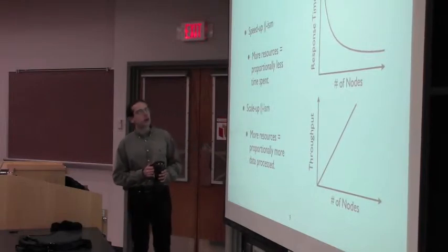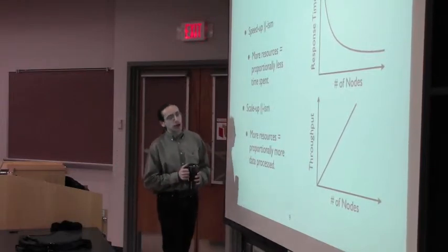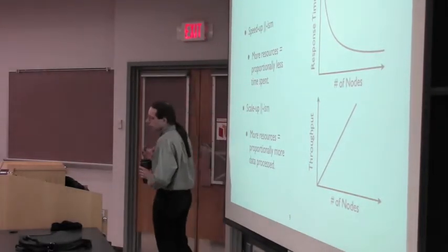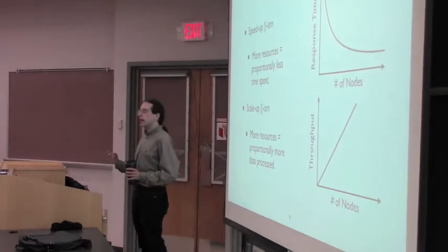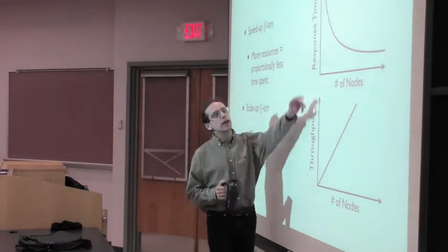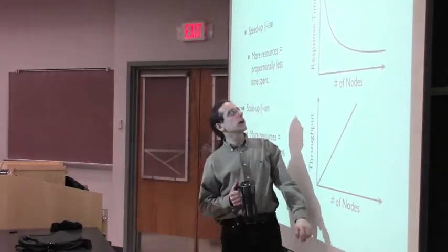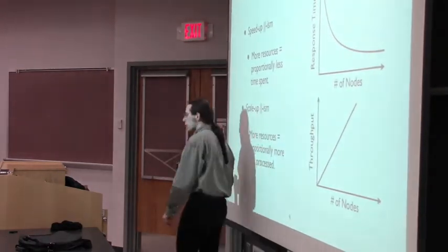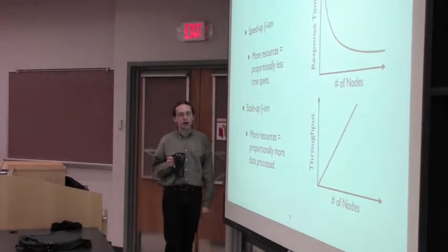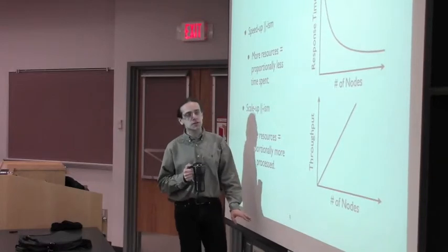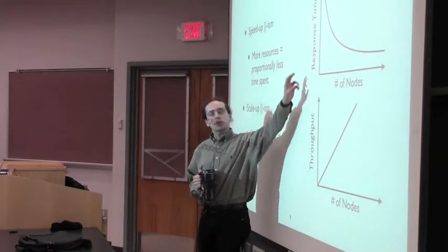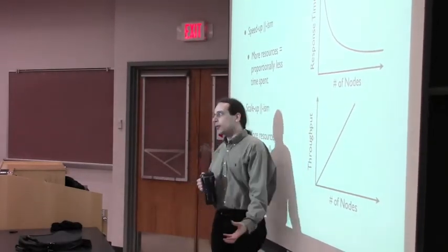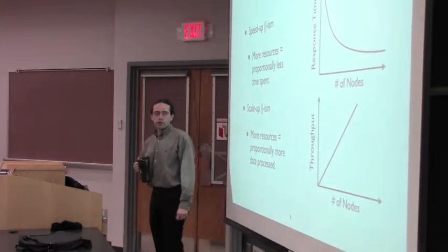Okay. So, a little more terminology. There are two kinds of parallelism that we can get. Either speed up parallelism, where by throwing more resources at a problem, we can make it go faster. So essentially, we want to see this sort of inverse linear curve if that happens, where the response time drops as the inverse of the number of nodes that we throw at the problem. The other possibility is scale-up parallelism, where by throwing more nodes at the system, we may not necessarily be able to reduce response time, but we can add more nodes to the system and get better performance.